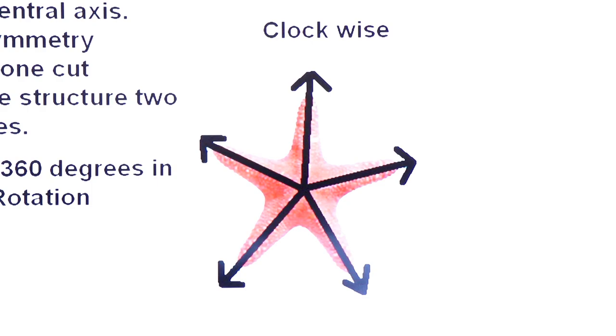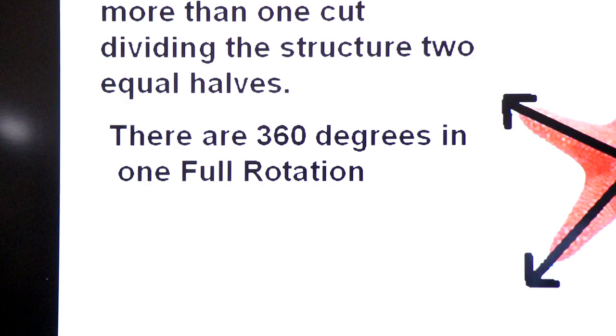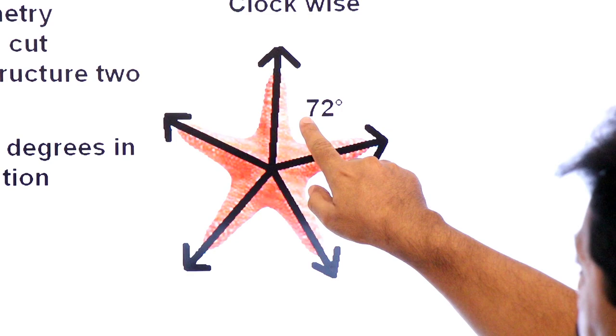Now you will see that one turn, this is rotational symmetry, dear students. One full turn will be able to get 360 degrees. There are 360 degrees in full rotation, full turn.